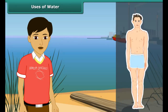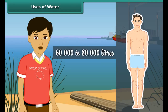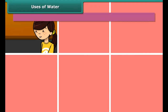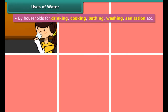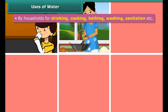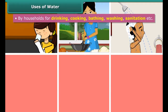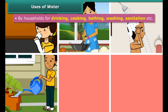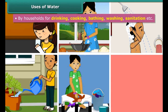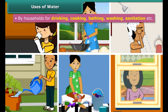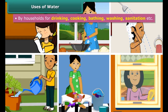We use water for various different purposes. On average, a human being consumes about 60,000 to 80,000 liters of water in his lifetime. Water is used in households for drinking, cooking, bathing, gardening, washing and cleaning purposes.